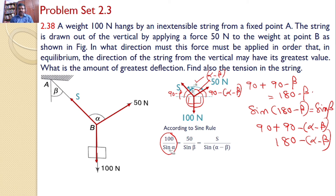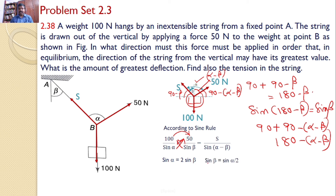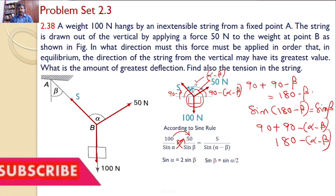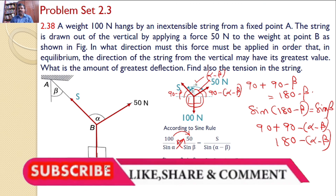Now taking the two expressions 100 divided by sine(alpha) equals 50 divided by sine(beta), after cross multiplication and simplifying you will get sine(alpha) equals 2 times sine(beta), or equivalently sine(beta) equals sine(alpha) divided by 2.